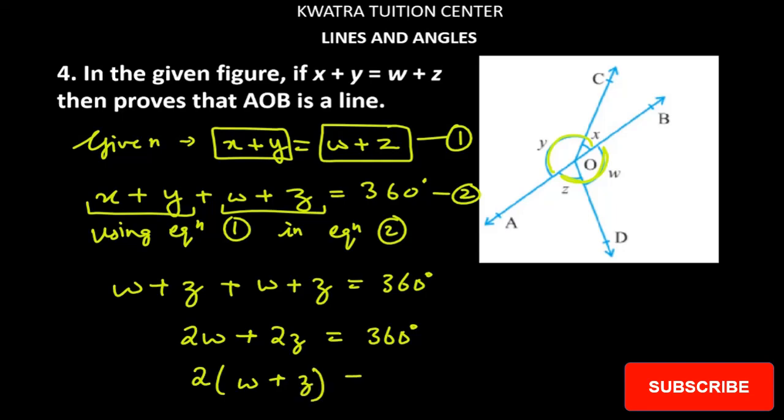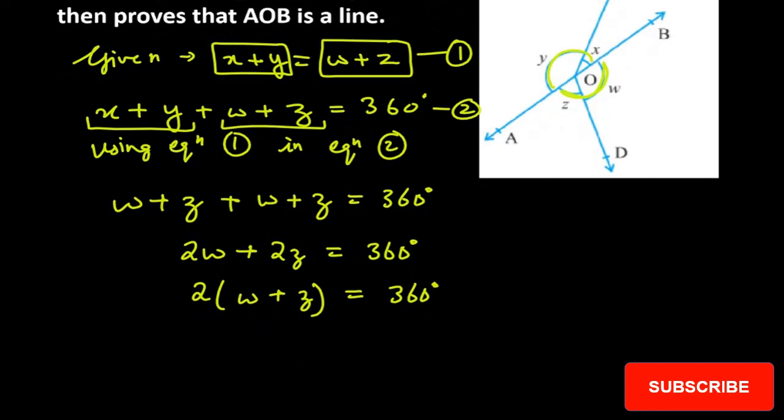So it will be 2(w plus z) is equal to 360. And how much value will come to us? w plus z will be 360 over 2, and what is 360 over 2? It is 180 degree.